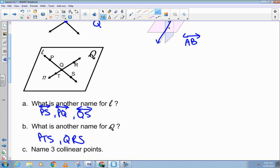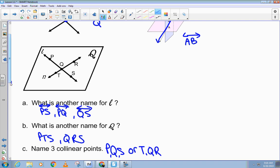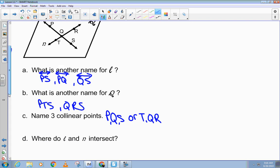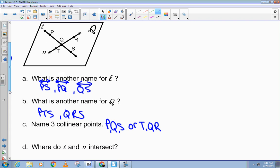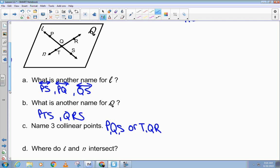Give me three collinear points. PQS, or I have another option, PQR. Where do line L and line N intersect? Point Q. Not the cursive one, right? Just the capital one.